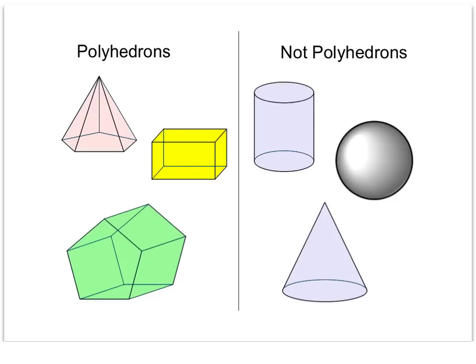Chapter 12 is all about surface area of solids, so we want to start by talking about the difference between polyhedrons and not polyhedrons. Polyhedrons are any three-dimensional solid made up of flat faces — you'll see all straight edges on these solids. Any time you have a curved surface, like spheres, cones, and cylinders, those would be considered not polyhedrons.